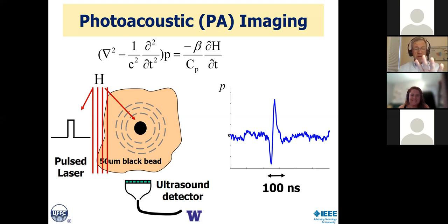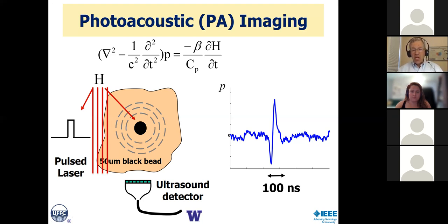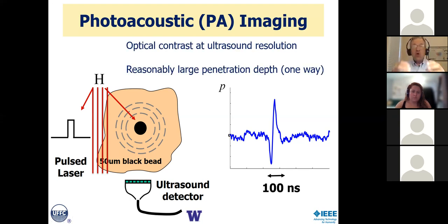I only have two or three equations in the whole presentation, but this one describes what's going on. The left side is a standard wave equation — a propagating pressure wave P, where C is the speed of sound, not light. The source term is related to thermodynamic parameters such as the coefficient of thermal expansion and heat absorbed H, which is directly related to the optical parameters. This nanosecond-scale pulsed experiment creates megahertz-level acoustic waves detectable with a conventional ultrasound transducer. You can then image those acoustic sources using traditional ultrasound means.